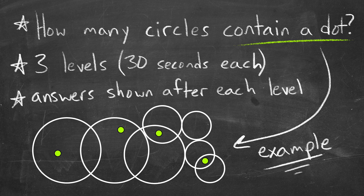So here's what we have going on. You need to figure out how many circles contain a dot. For example, down below, we have one circle containing a dot, two circles containing a dot, three circles, four circles.